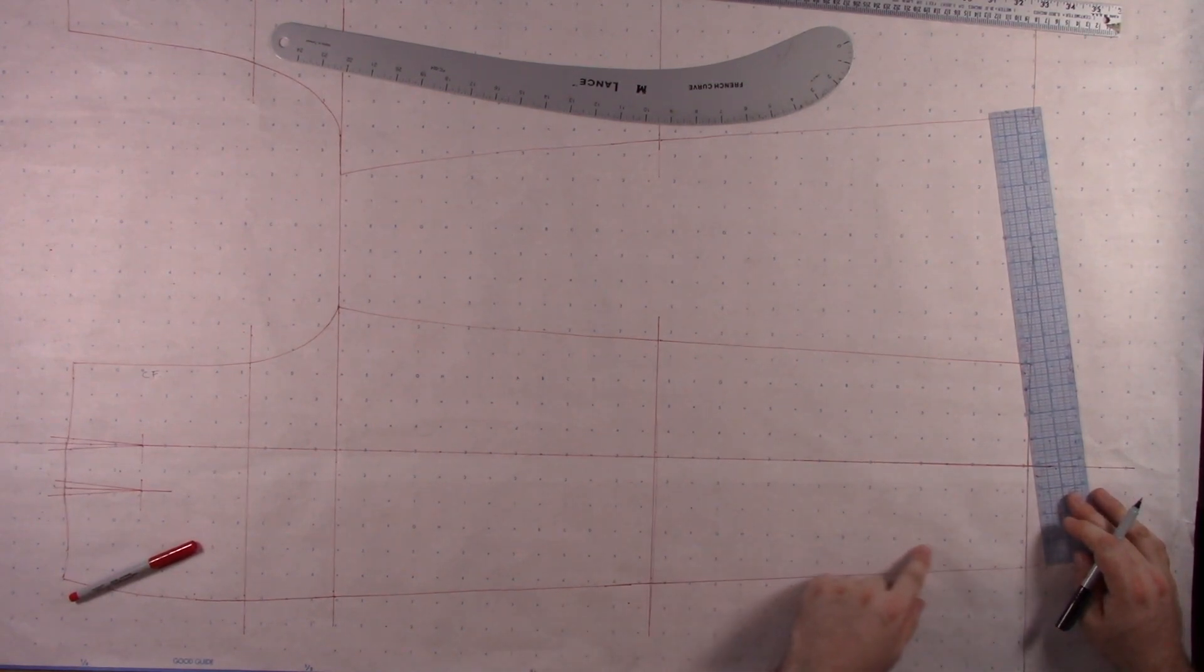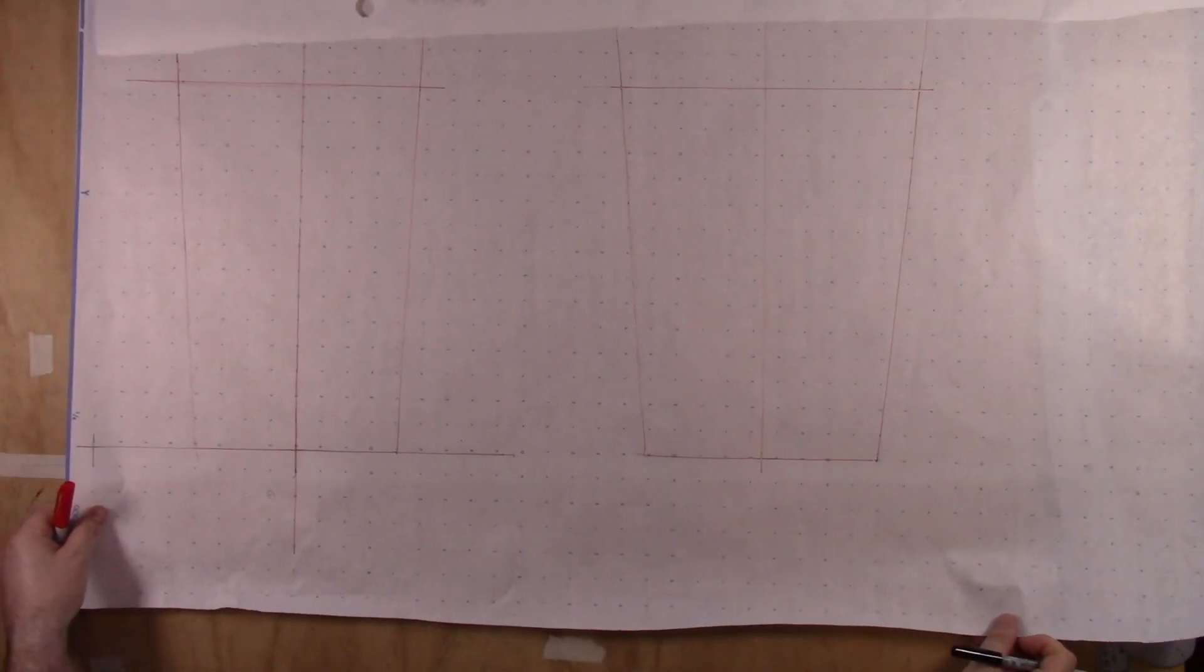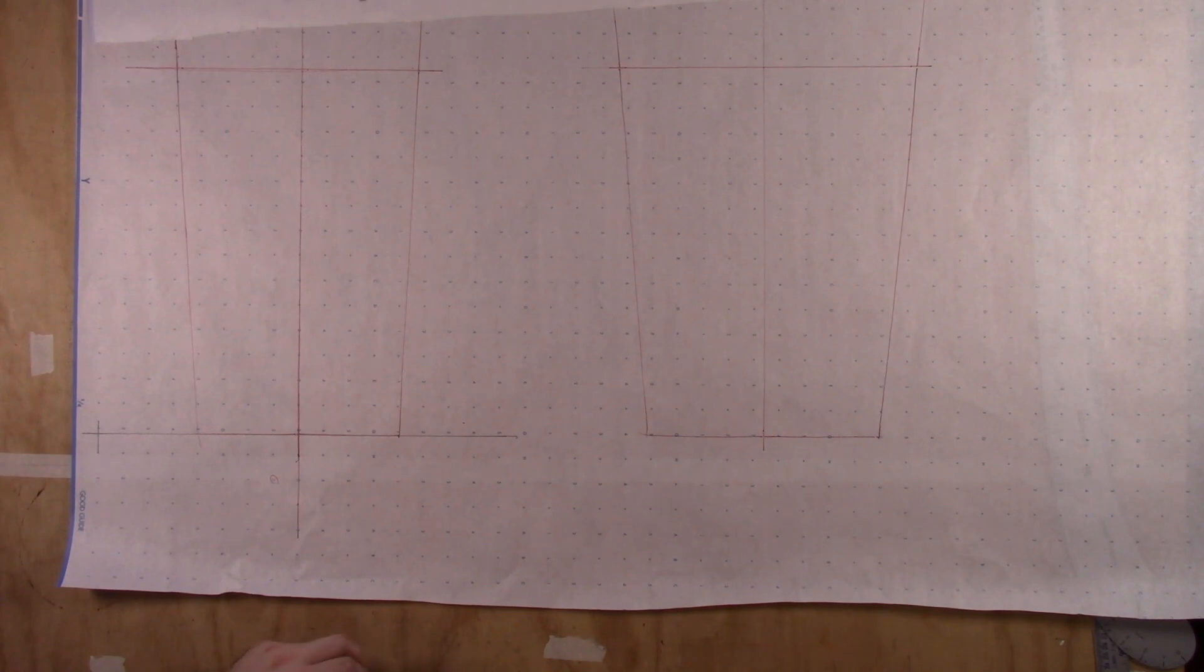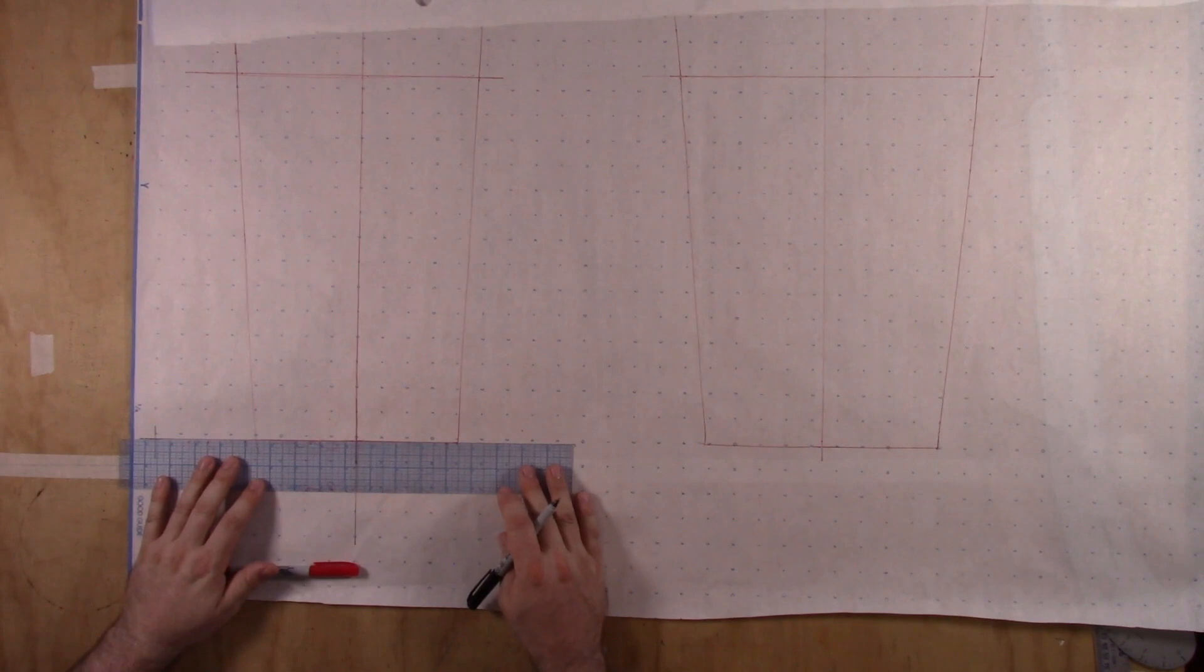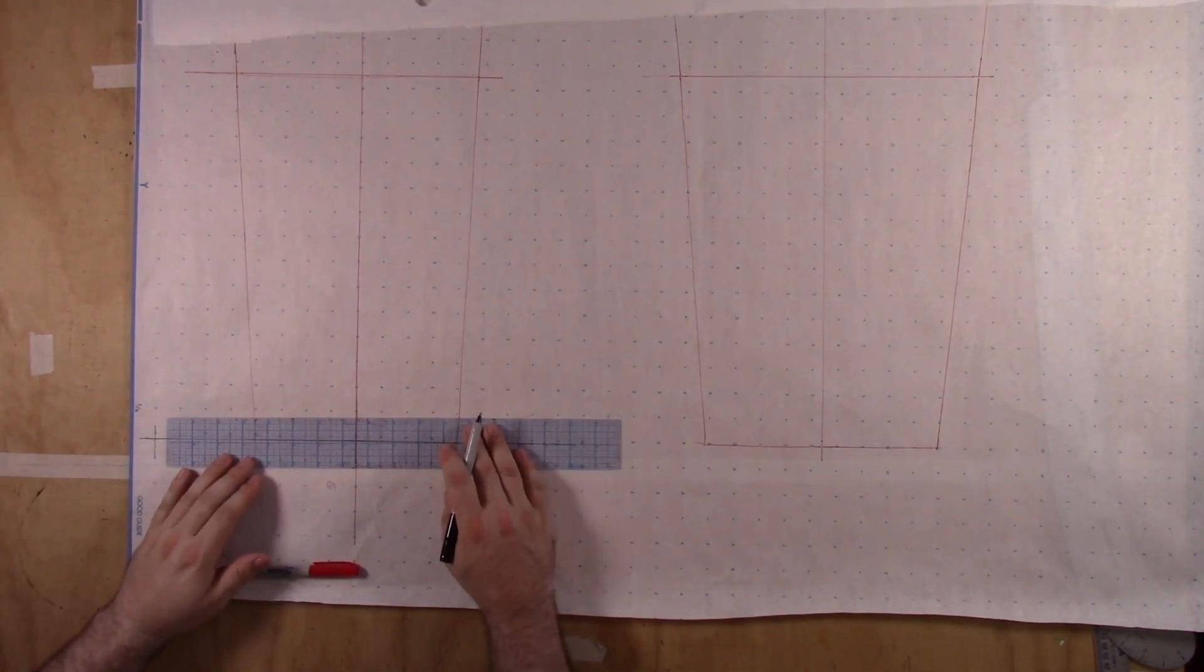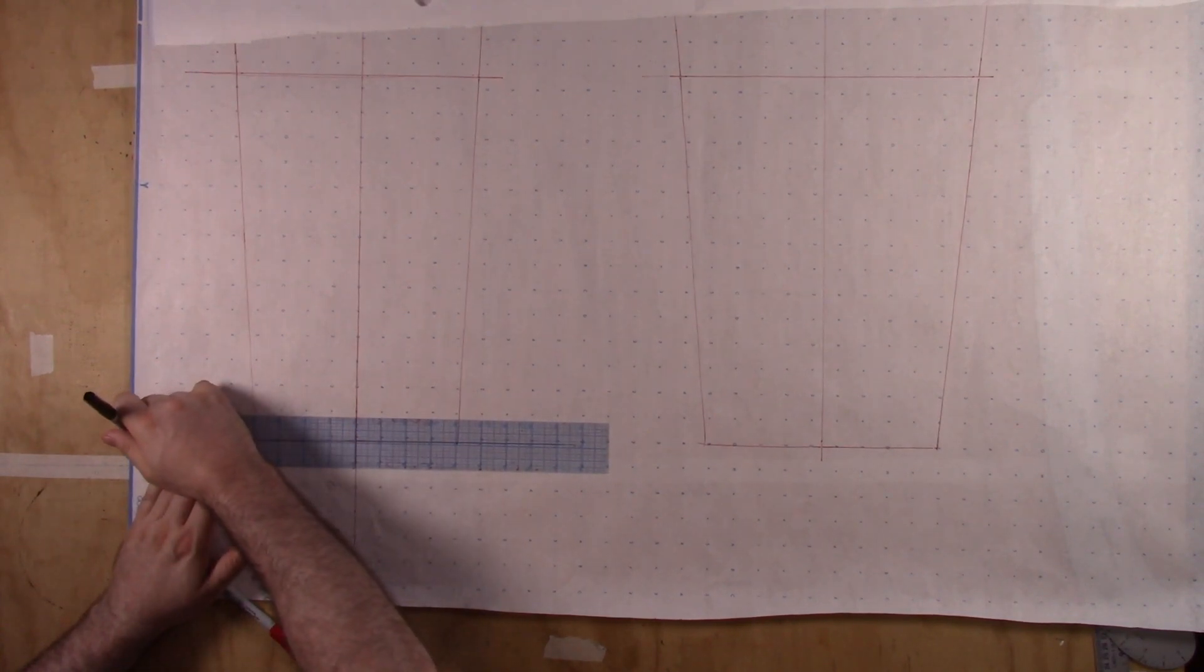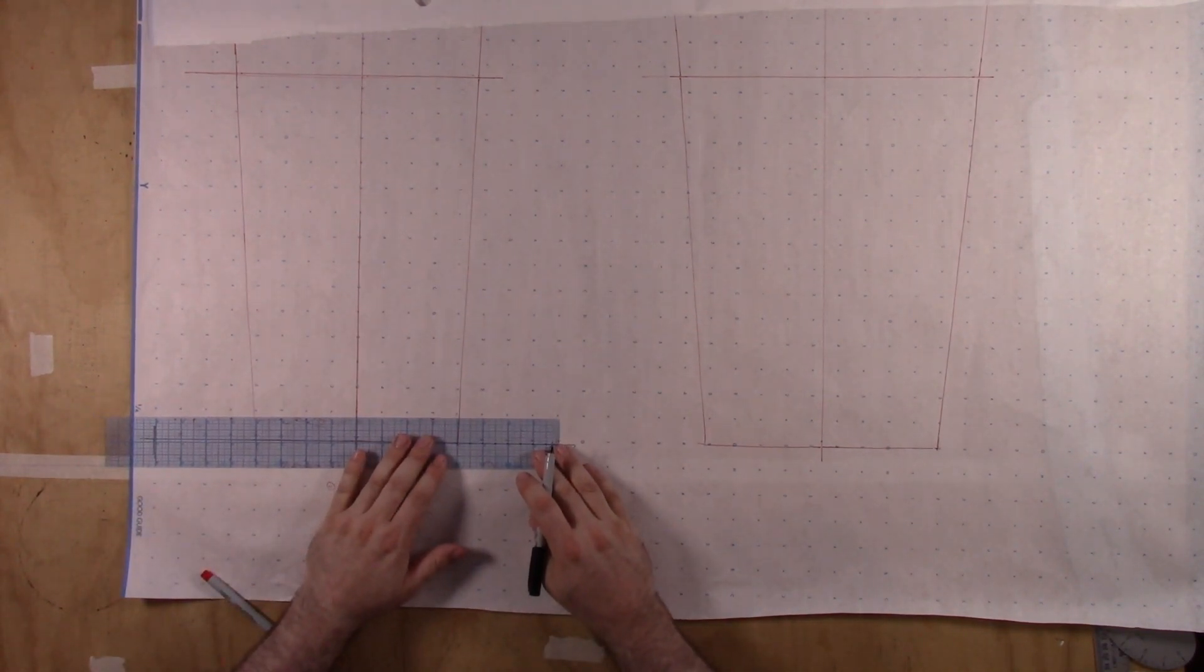So I'm going to measure out, here's my side seam right here. I'm going to measure out four inches in both directions, and I'm measuring out, here's my side seam, I'm going to measure out four inches from side seam, and mark. And then here's my inseam, I'm going to measure out four inches there, and mark.